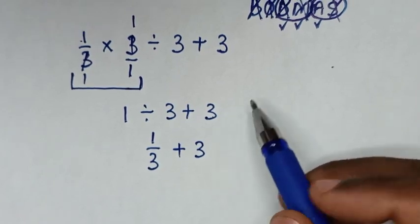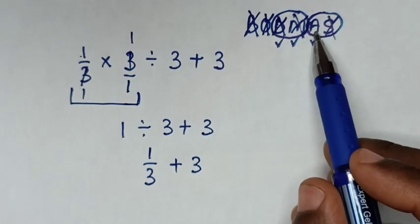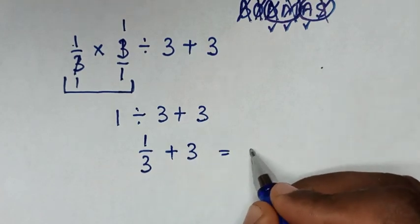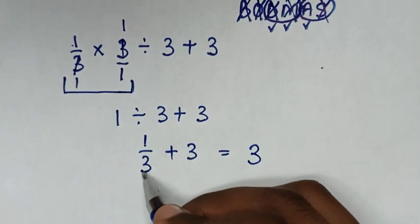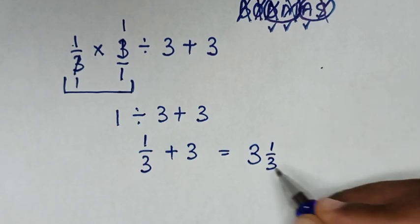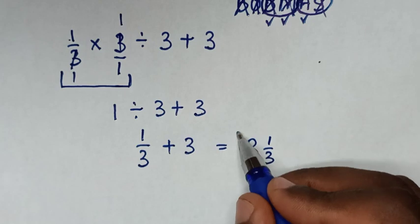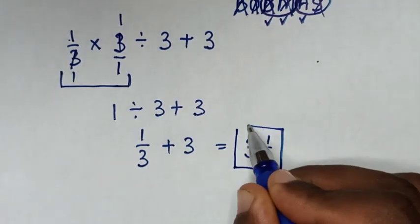Then the only operation that remains is this addition. So 1 over 3 plus 3 is equal to 3 and 1 over 3 as a mixed fraction. So this is our final answer.